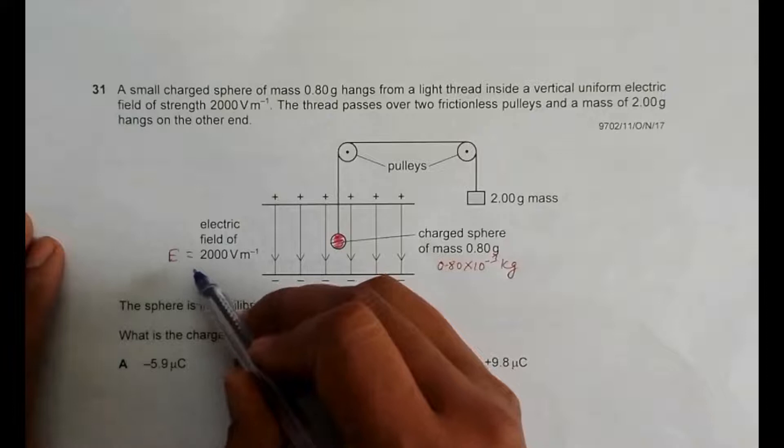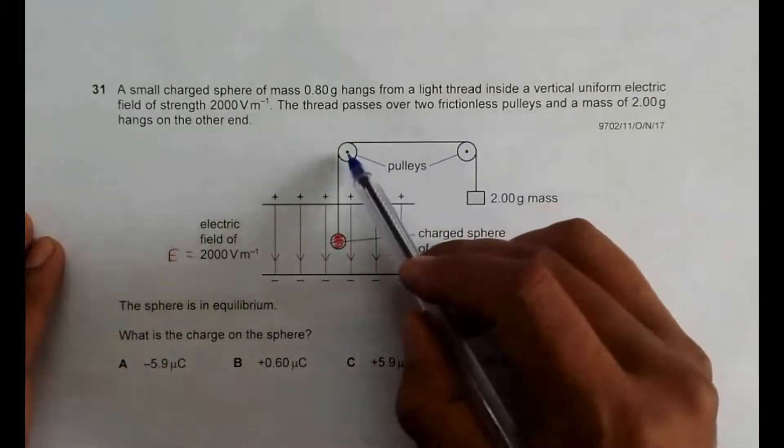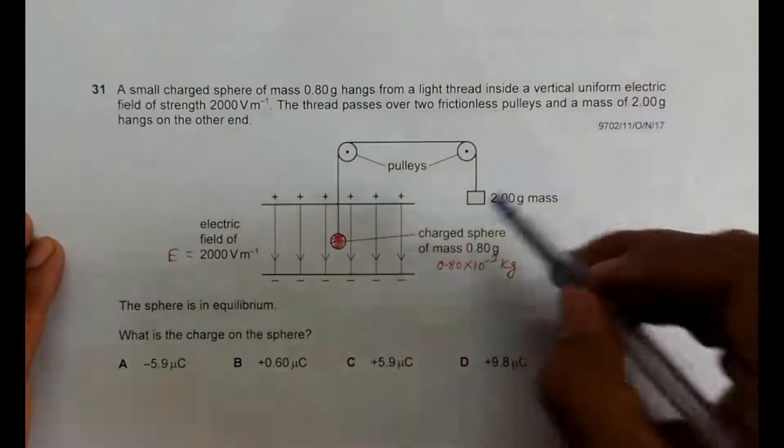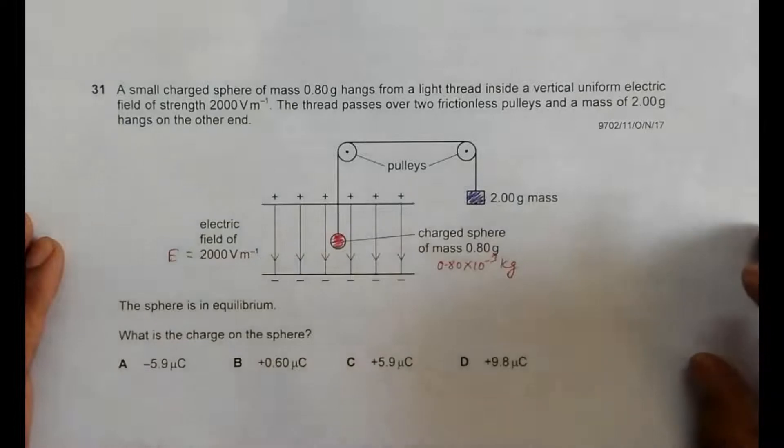The thread passes over two frictionless pulleys, here are the pulleys, and a mass of 2 grams, so this is a 2 gram mass, hangs on the other end.